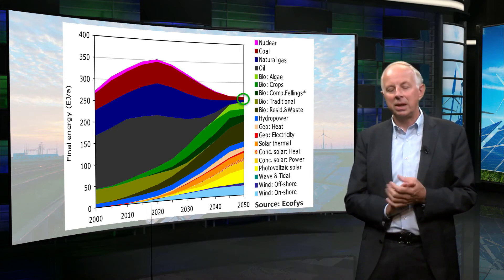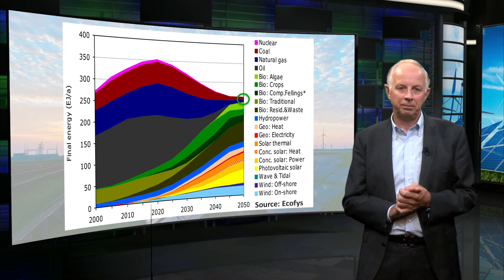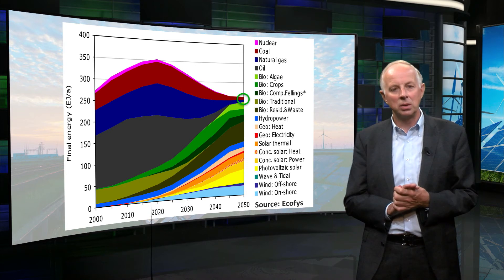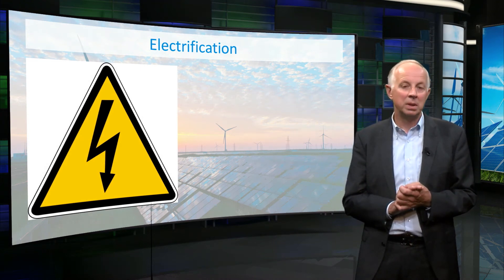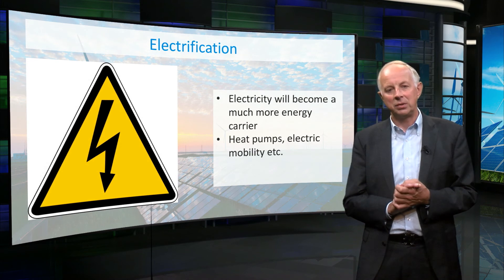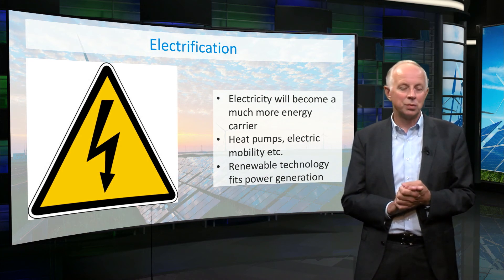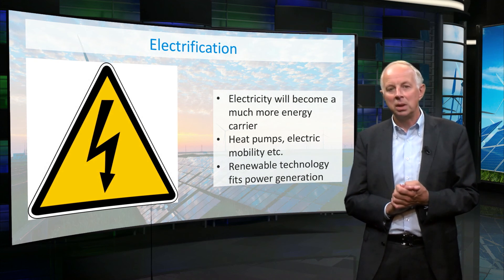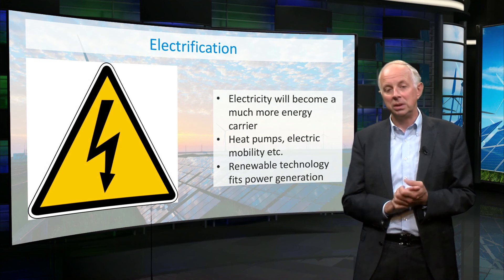The thing with scenarios is that they carry a lot of uncertainty. Scenarios try to describe a possible future, a future which is inevitably uncertain. We cannot determine how the factors supporting the scenario will turn out. However, some factors are less uncertain than others. One of them is an increasing electrification of the world. Electricity will become a much more important energy carrier due to heat pumps, electric mobility, and the fact that many renewable technologies are particularly suitable for electricity generation. Over all three IEA scenarios, the generation of power from renewable sources is expected to increase between 125 and 250 percent in 2040 relative to 2014.